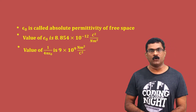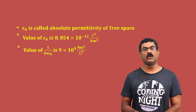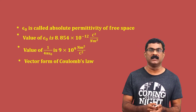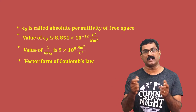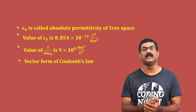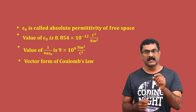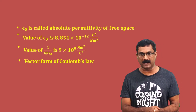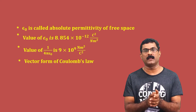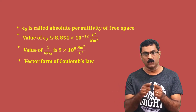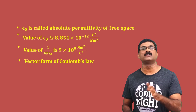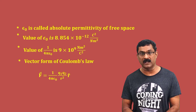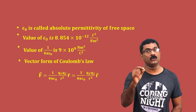Now let's look at the vector form. Electrostatic force is acting along the line joining the two charges. The vector form is 1 by 4π epsilon₀ q1 q2 divided by r square, acting along the unit vector r-cap. The equation takes the form: F vector equals 1 by 4π epsilon₀ q1 q2 divided by r square into r-cap. This is the vector form.